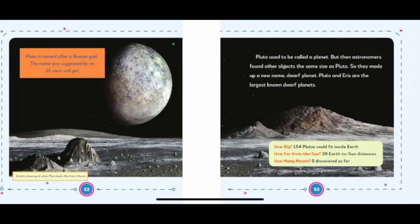How big? 154 Plutos could fit inside Earth. How far from the Sun? 39 Earth-to-Sun distances. How many moons? Five discovered so far.